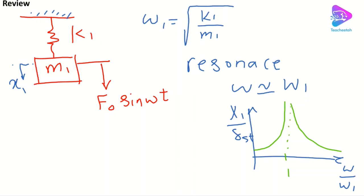At the frequency equal to the natural frequency, we get a huge amplitude — in theory it's infinite, but in practice the system may be damaged or some structural damping stops the system. Just to remember, δ_static = f₀/k1; this is the static deflection of the system. Now we want to add a component to avoid this resonance behavior.